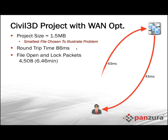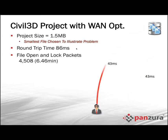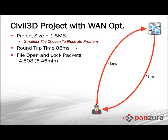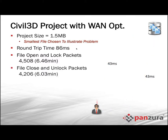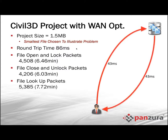When we looked at this project, in order to open this template file, the application was doing many, many checks. The file opens and locks that the application was doing to verify that template and all of its dependencies happened to account for over 4,500 round trips across that network, across that latency. If you multiply 4,500 times 86 milliseconds, you're up at approximately six and a half minutes. If you're going to do opens and locks, you'll do approximately the same amount of closes and unlocks, and prior to that, about the same number of lookups. Add those all up and you're around 18 to 20 minutes — and you haven't moved any data. This is the chatter of opening a project.